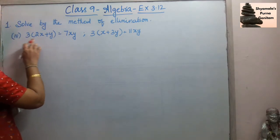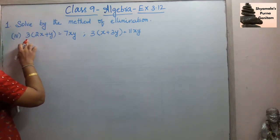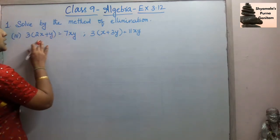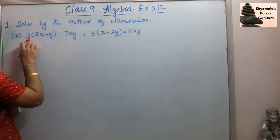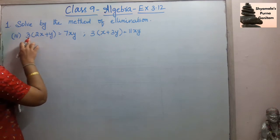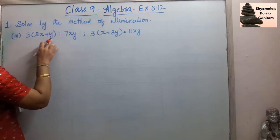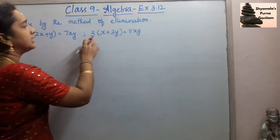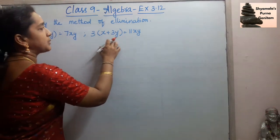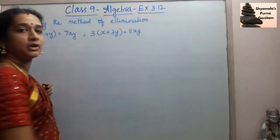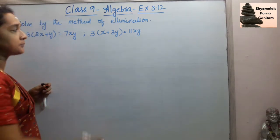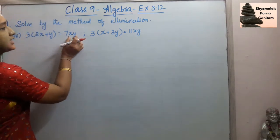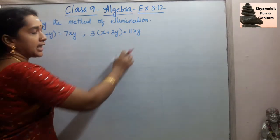Here, 2 equations are given: the first is 3 into (2x + y) = 7xy, and the second is 3 into (x + 3y) = 11xy. Here the xy term is present in both equations.